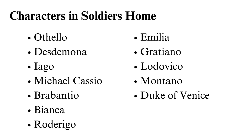Michael Cassio is Othello's former army captain and is now a lieutenant. He is charming and handsome, which are the qualities that make him Iago's pawn. It is his handsomeness that makes Iago's lie about him cheating with Desdemona plausible. He is also courteous and gallant, which endear him to women, thus making Iago's lies seem implausible.